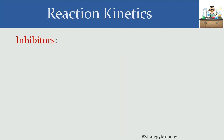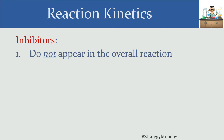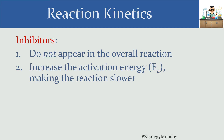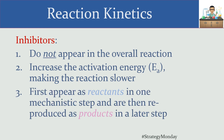How does that compare with an inhibitor? Everything said about a catalyst is true, except the effect is opposite. Instead of making the reaction faster, an inhibitor makes it slower. Inhibitors also don't appear in the overall reaction, but instead of decreasing the activation energy, they increase it — making the reaction much slower. In biochemistry, inhibitors come in different types such as competitive and non-competitive, but kinetically they all work the same way: increasing the activation energy.